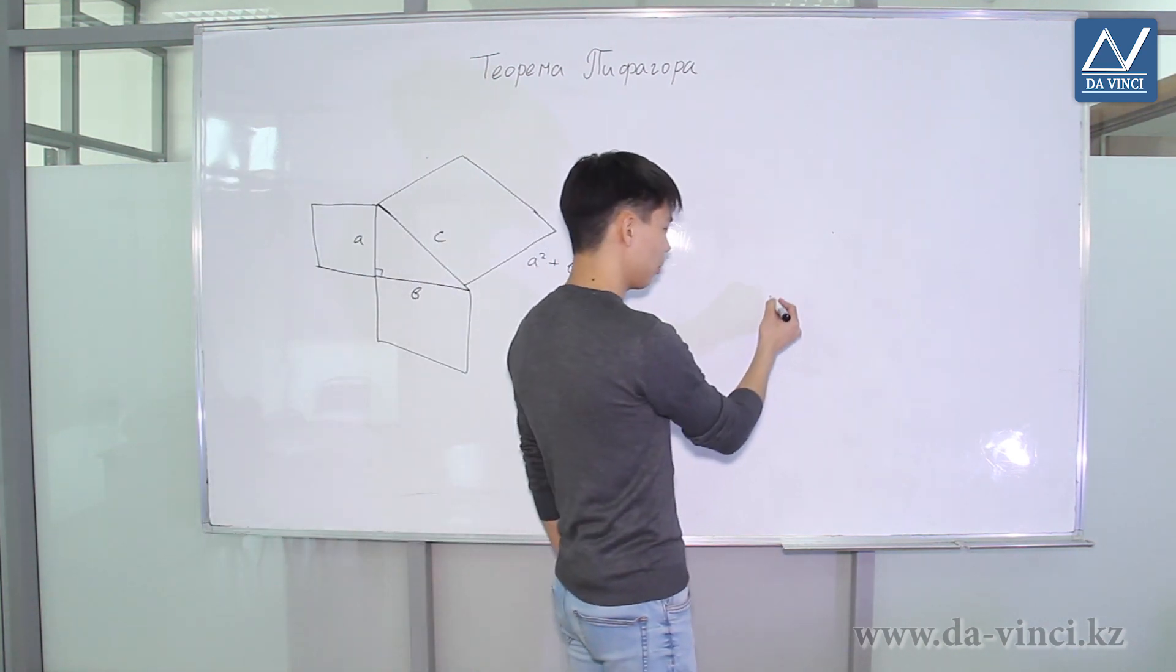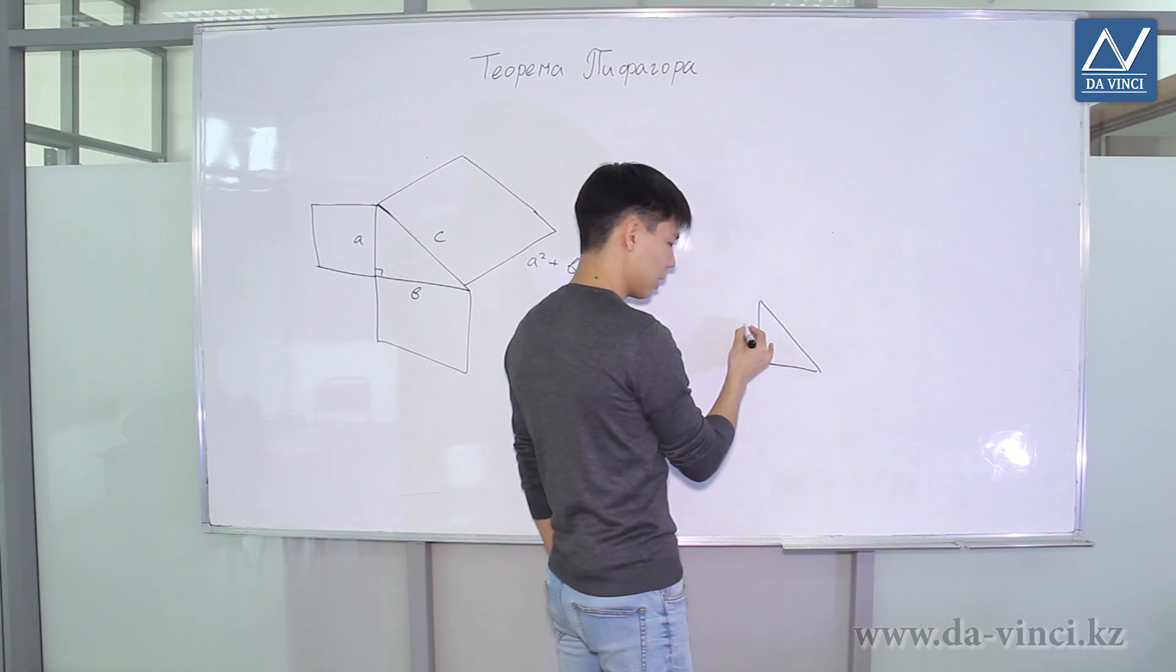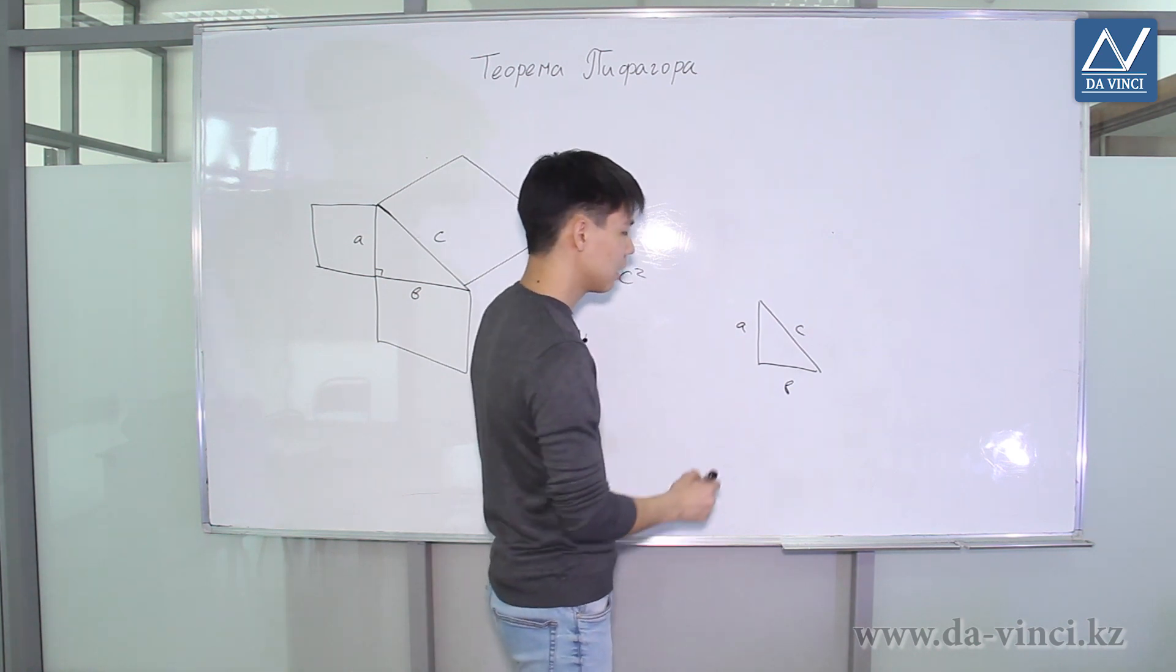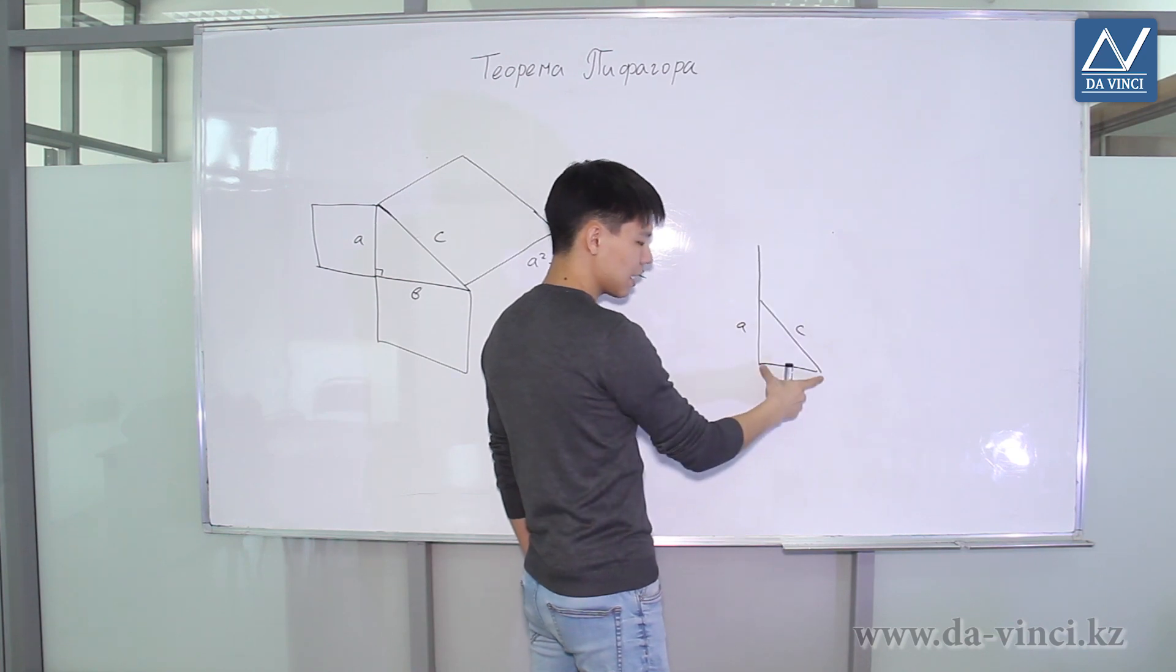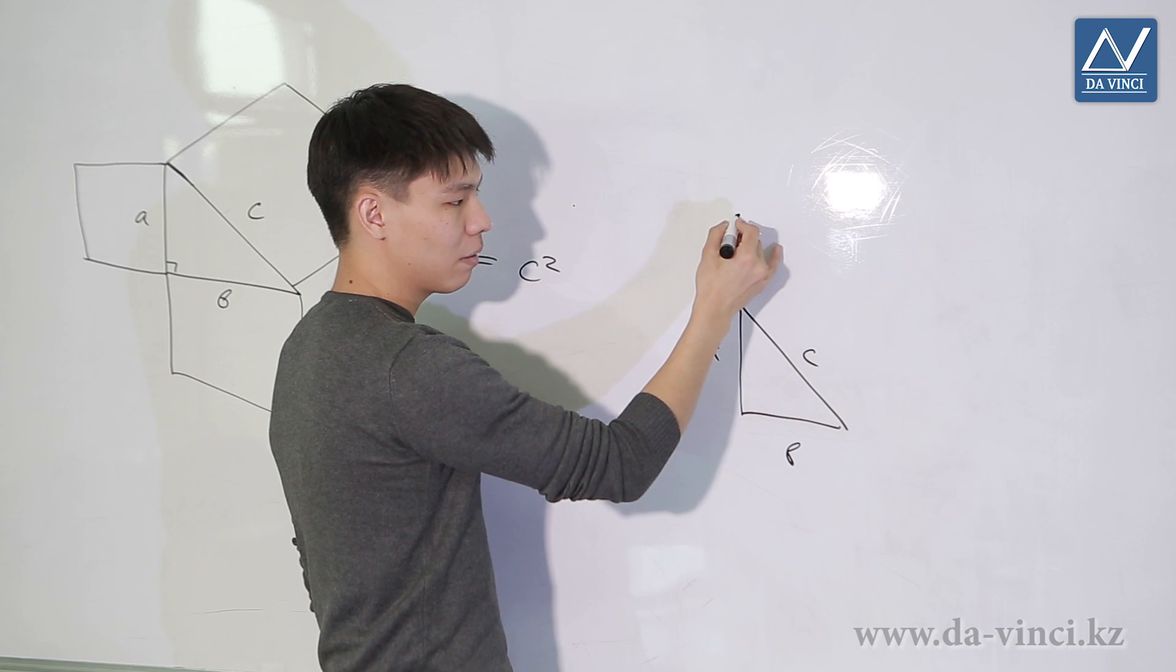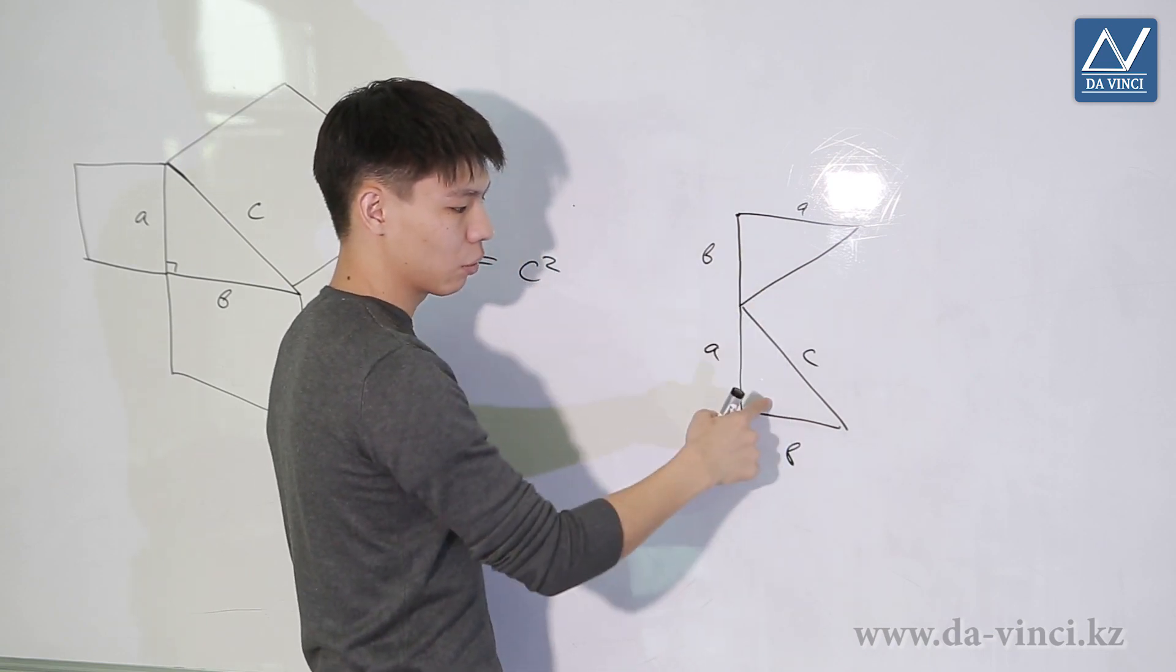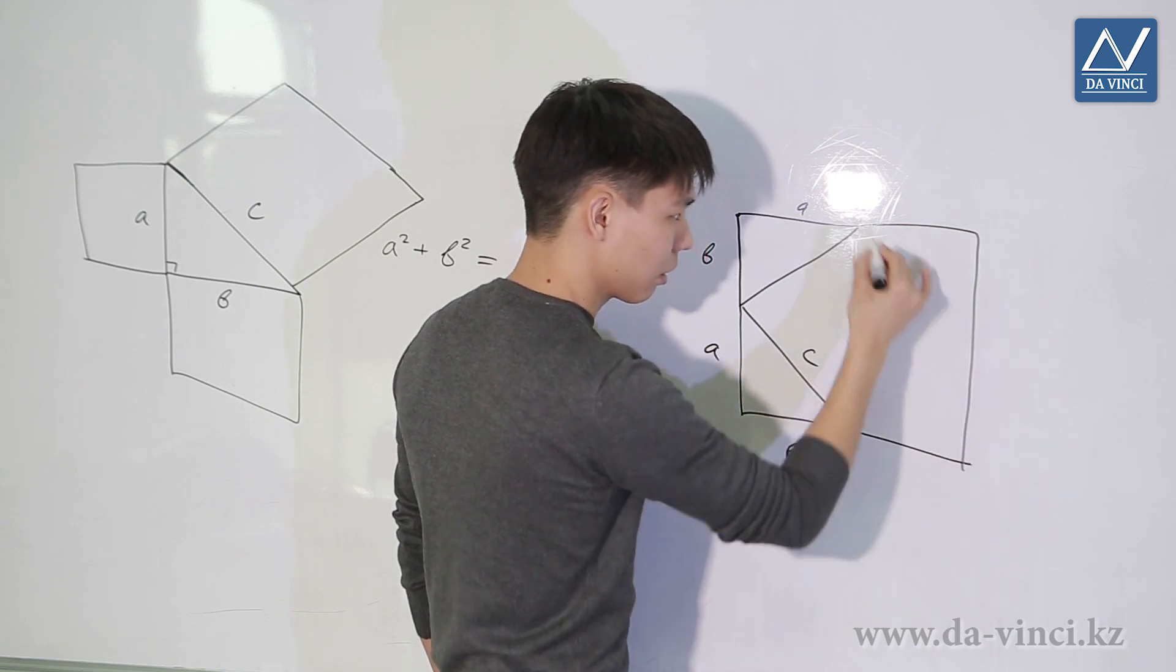Let's use one of them. To prove the Pythagorean theorem, we consider a right triangle with legs A and B and hypotenuse C. Now we finish building this right-angled triangle to a square as follows. We continue the leg with A length to a distance B, and now we draw a perpendicular to this point at a distance A. We got the same triangle, but inverted. Similarly, we finish building from this side and from this side.